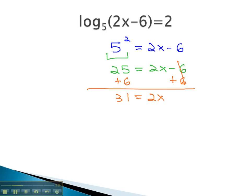Finally, to get the x alone, we'll divide both sides by 2, and we end up with x is equal to the fraction 31 halves.